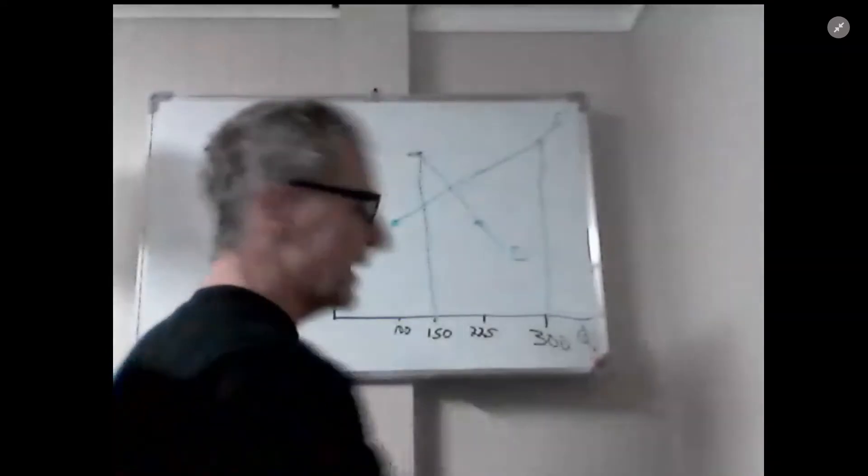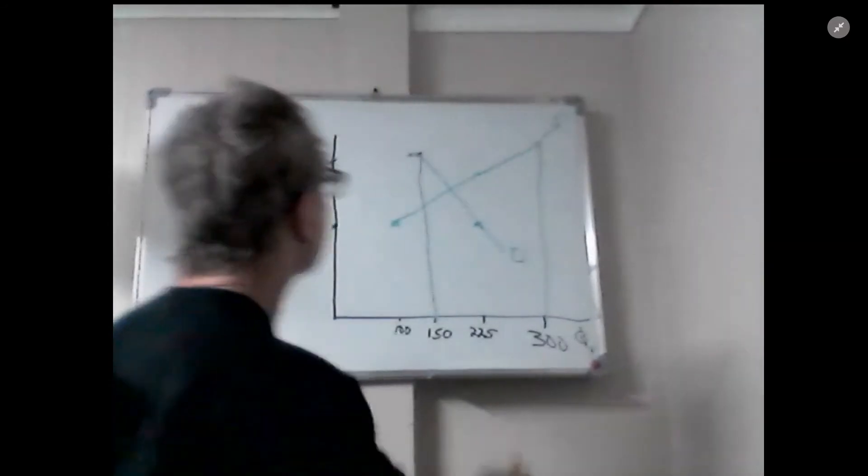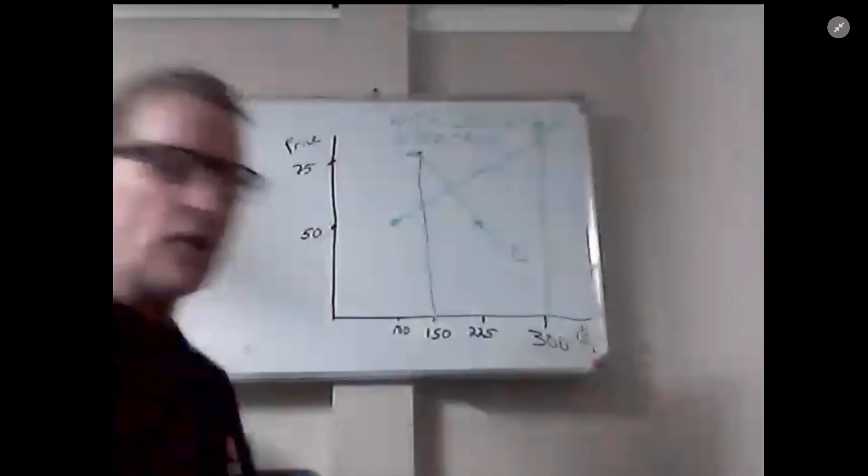Now we're looking for the slopes. We know that when we change the price from $75 to $50, delta P equals -25. The change in quantity supplied drops from 300 to 100, so that's -200. The slope is simply the ratio, which equals +1/8. It's positively sloped - every dollar increase in price will increase the number of seats by 8.